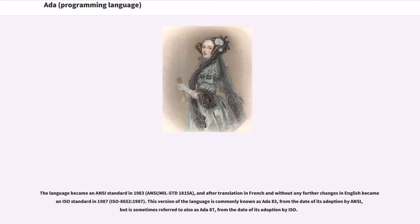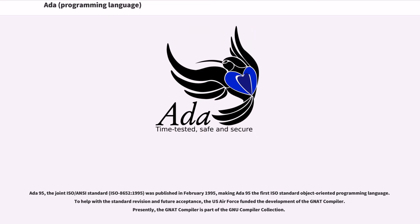The language became an ANSI standard in 1983 (ANSI/MIL-STD-1815A), and after translation into French and without further changes in English became an ISO standard in 1987, ISO 8652:1987. This version of the language is commonly known as Ada 83, from the date of its adoption by ANSI, but is sometimes referred to as Ada 87, from the date of its adoption by ISO. Ada 95, the joint ISO/ANSI standard ISO 8652:1995, was published in February 1995, making Ada 95 the first ISO standard object-oriented programming language.